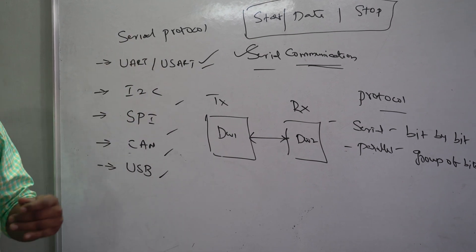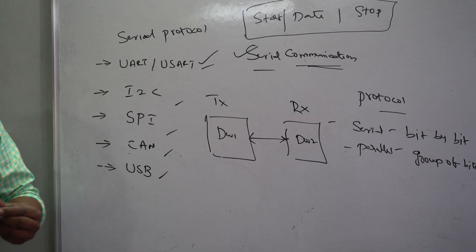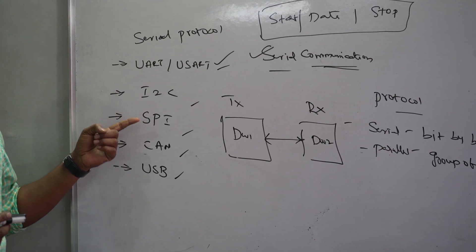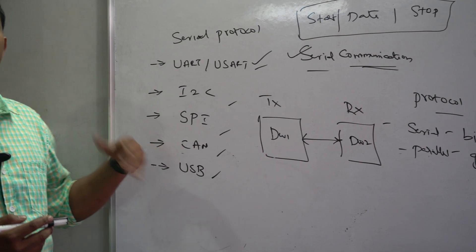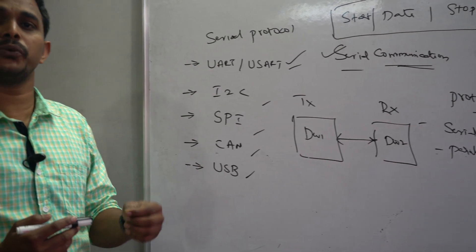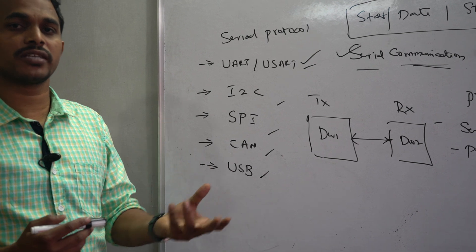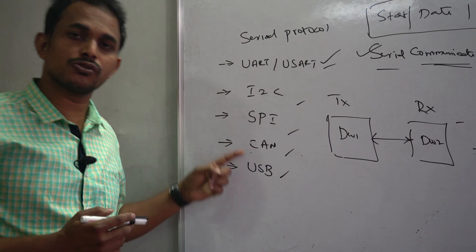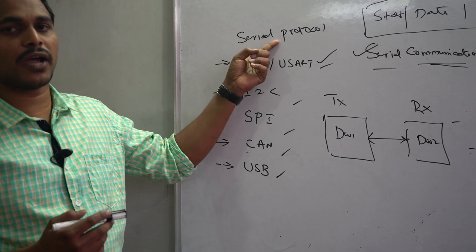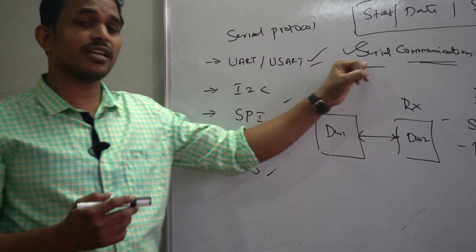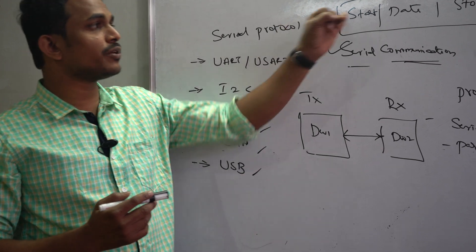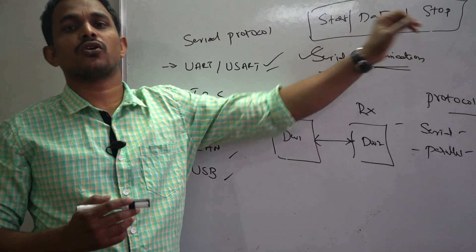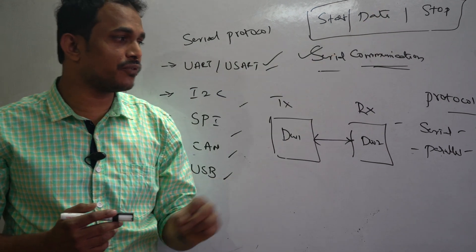Once you learn advanced microcontrollers, you will find additional protocols like I2C, SPI, CAN, and USB — all available in advanced microcontrollers like ARM Cortex 32-bit devices. But for the 8051, which supports serial communication with UART protocol only, the data is sent between start and stop bits. That is the most important thing for us.